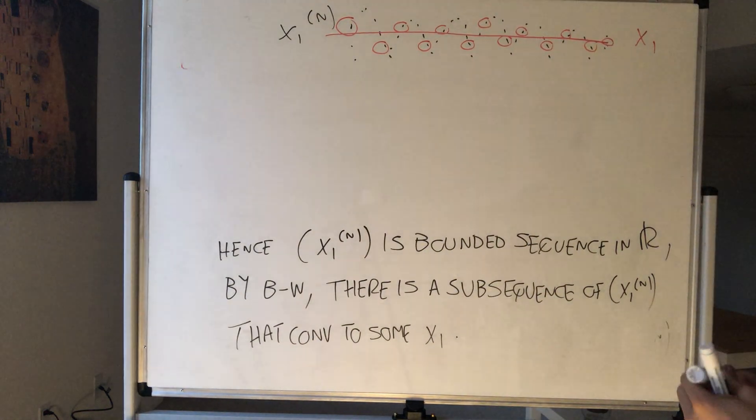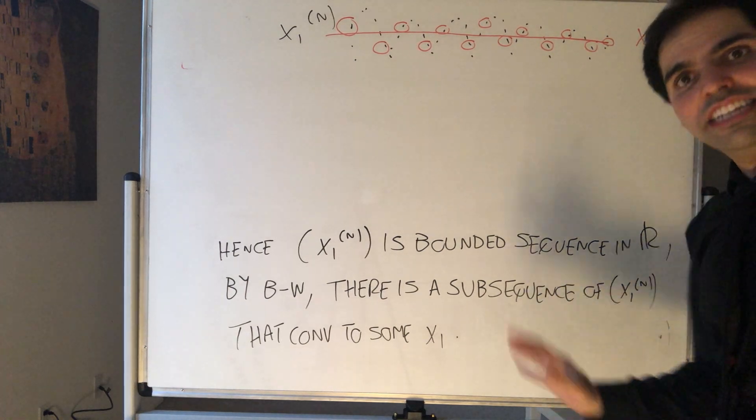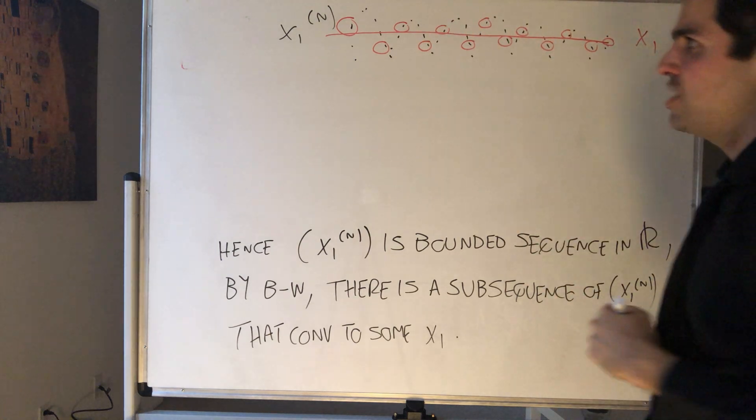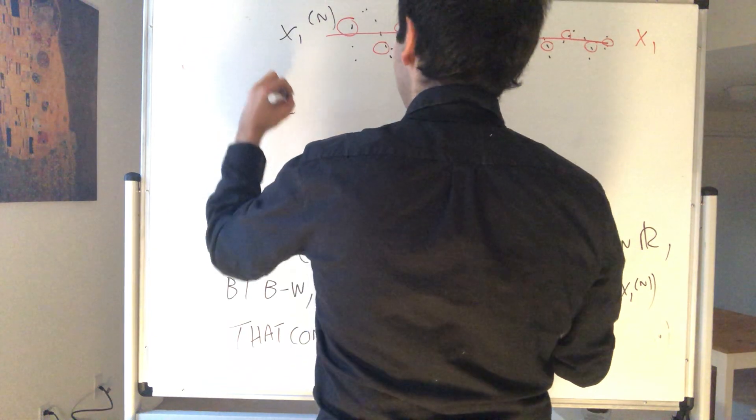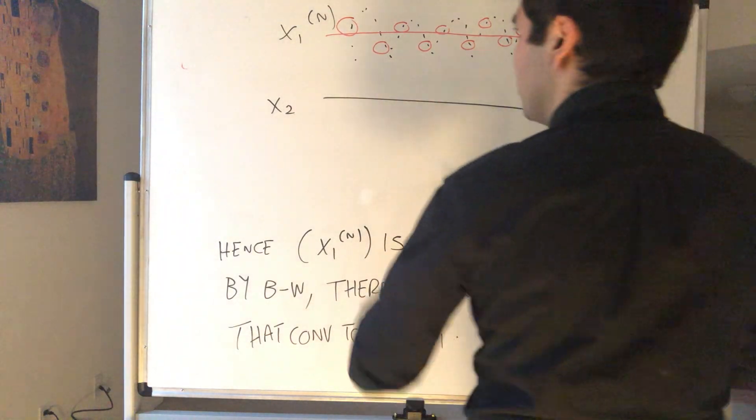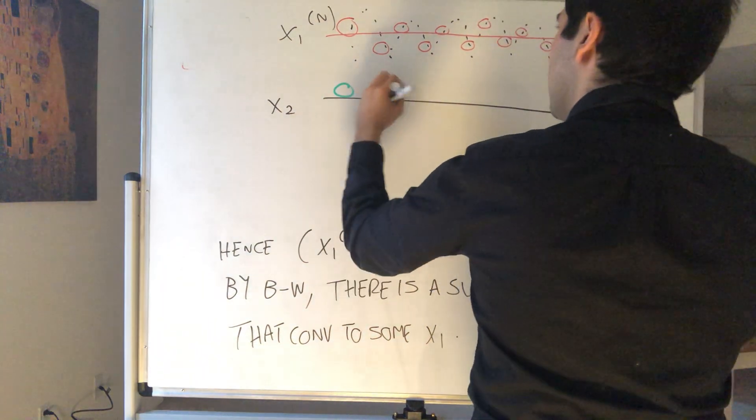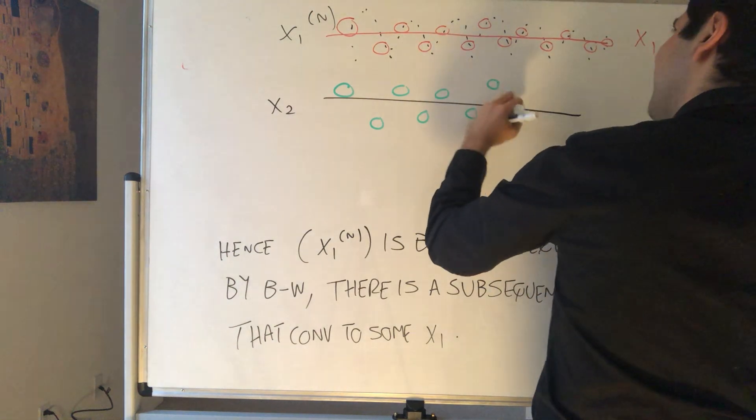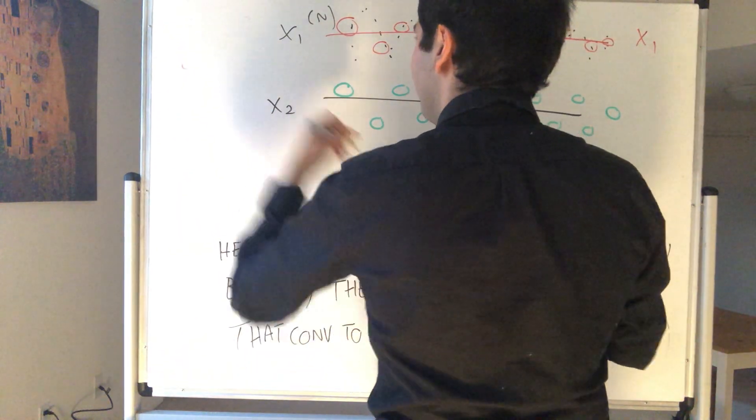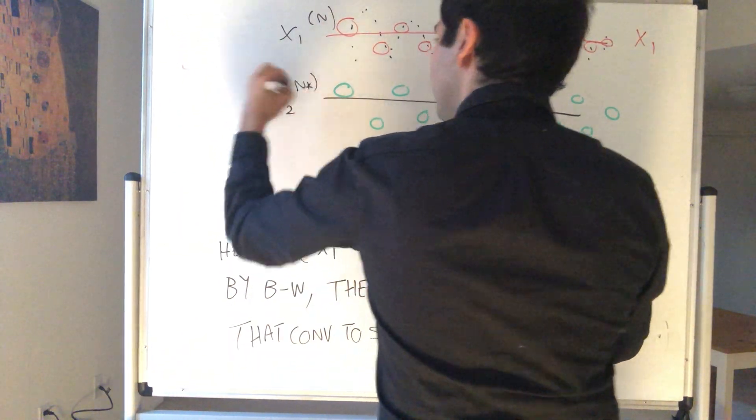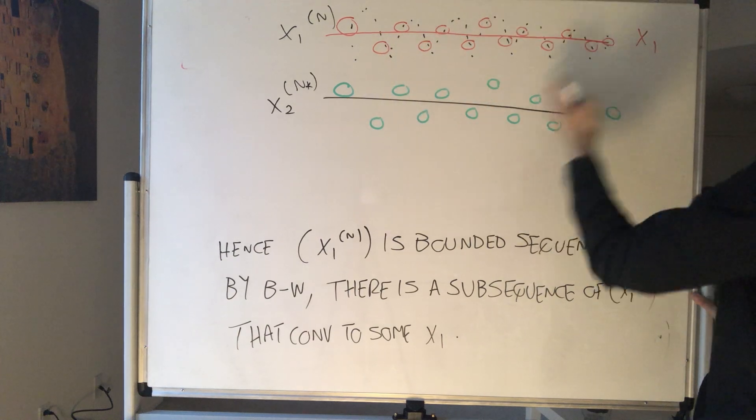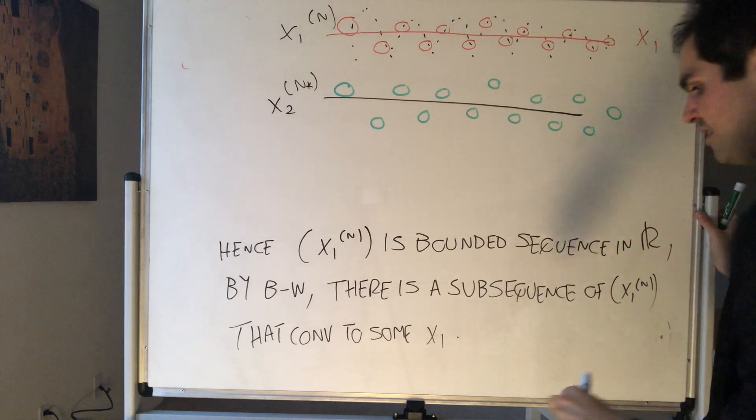Now here's the thing. The problem is you want each component to converge, and we don't know if the index is the same for each component. But that's not a big problem, because consider not X_2n, but X_2 of that subsequence. I don't want to write nk because k is already the last component, but let's do it anyway.